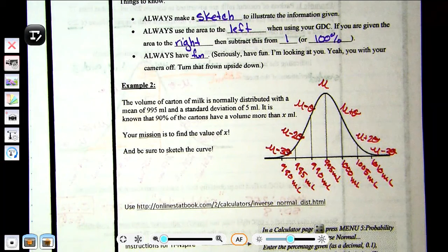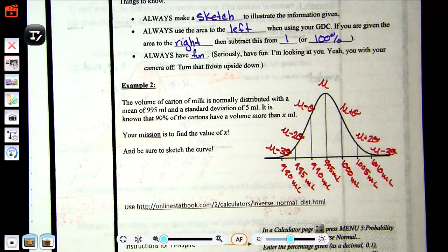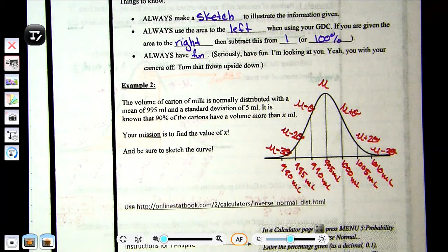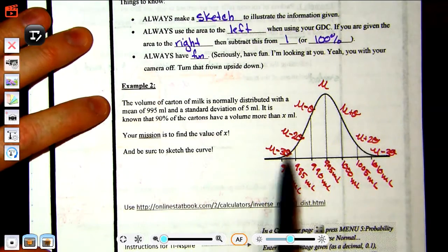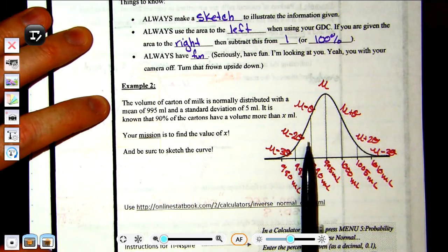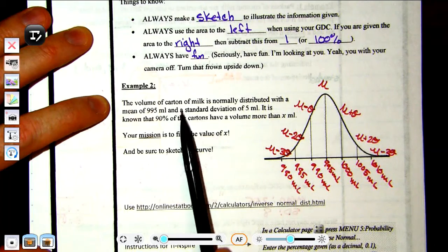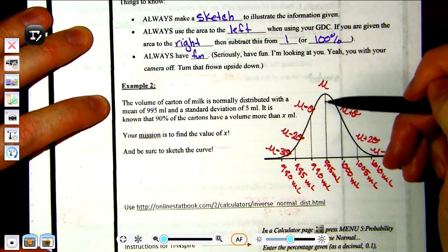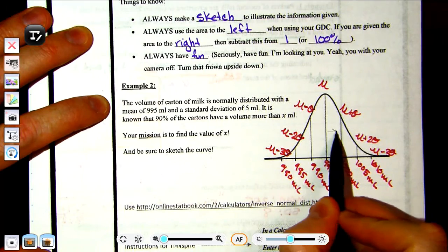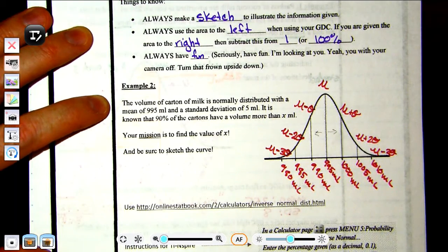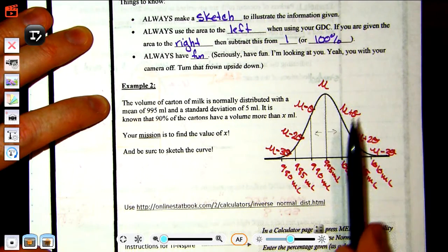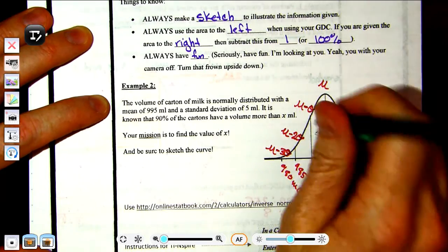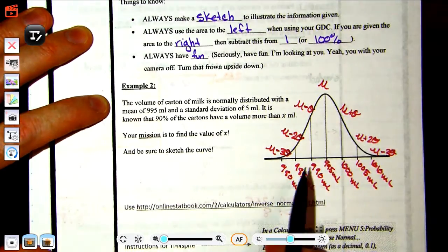Think about why this is a problem. It says there is some value on here, some x value, some milliliter that if I drew a line, 90% of the data would be—it says 90% of the cartons have a volume more than that. So 90% of the data to the right of it would exist. I know it can't be the mean logically because the mean cuts our value directly in half: 50% of the data is this direction, 50% of the data is this direction. So thinking logically, if 50% is over here and I want to find a line somewhere that 90% exists, that line is probably going to be somewhere over here. It's going to be somewhere over here, but where exactly? That's where our inverse calculator comes in.